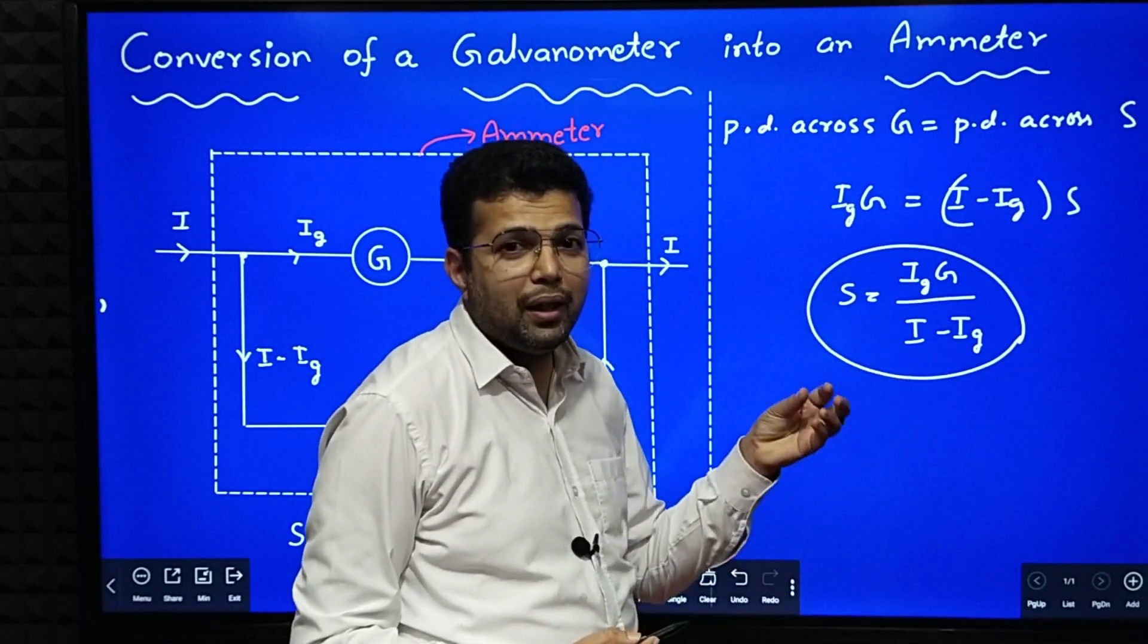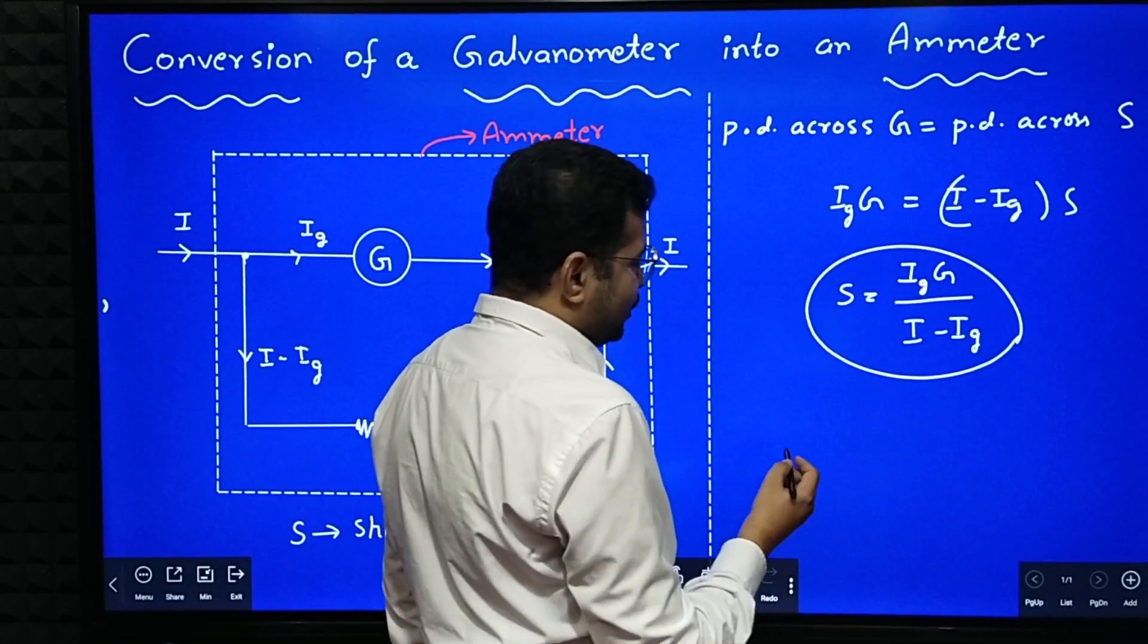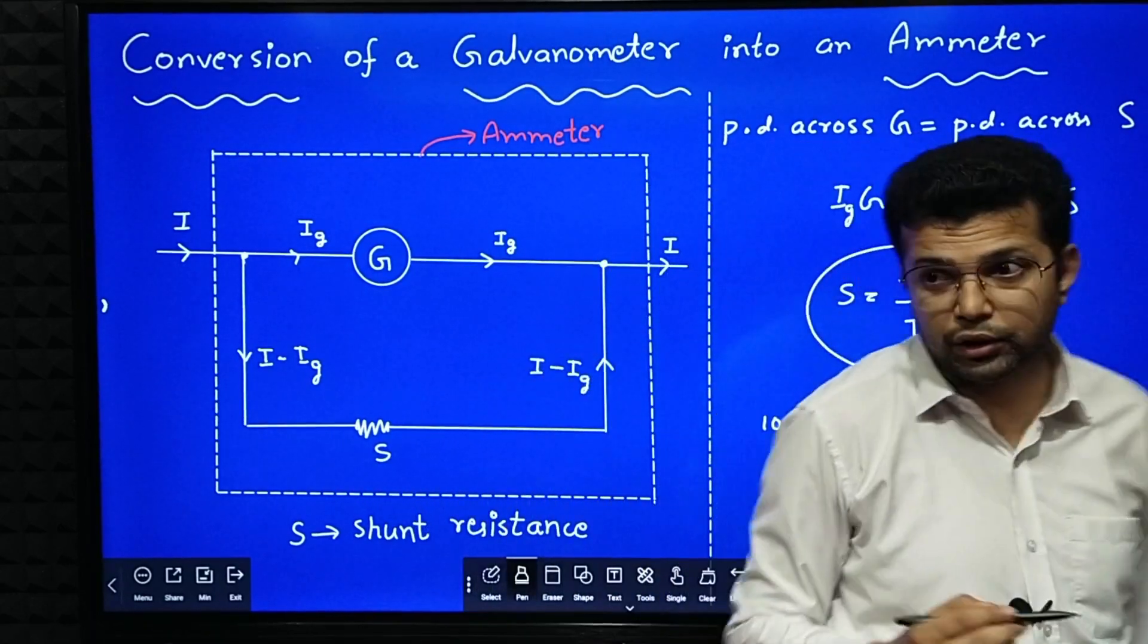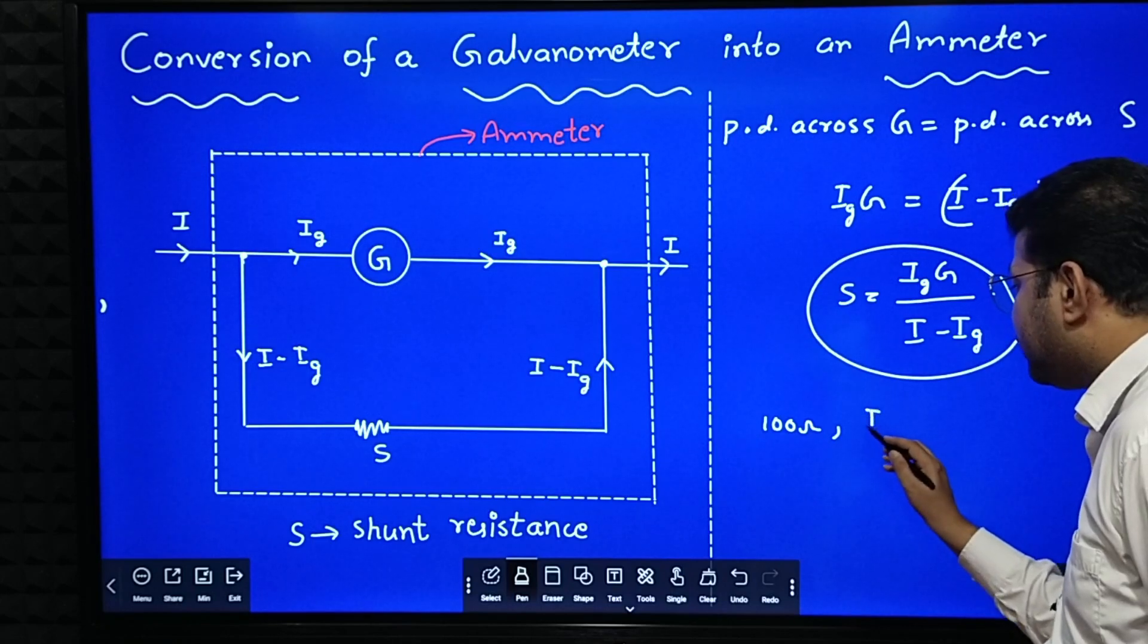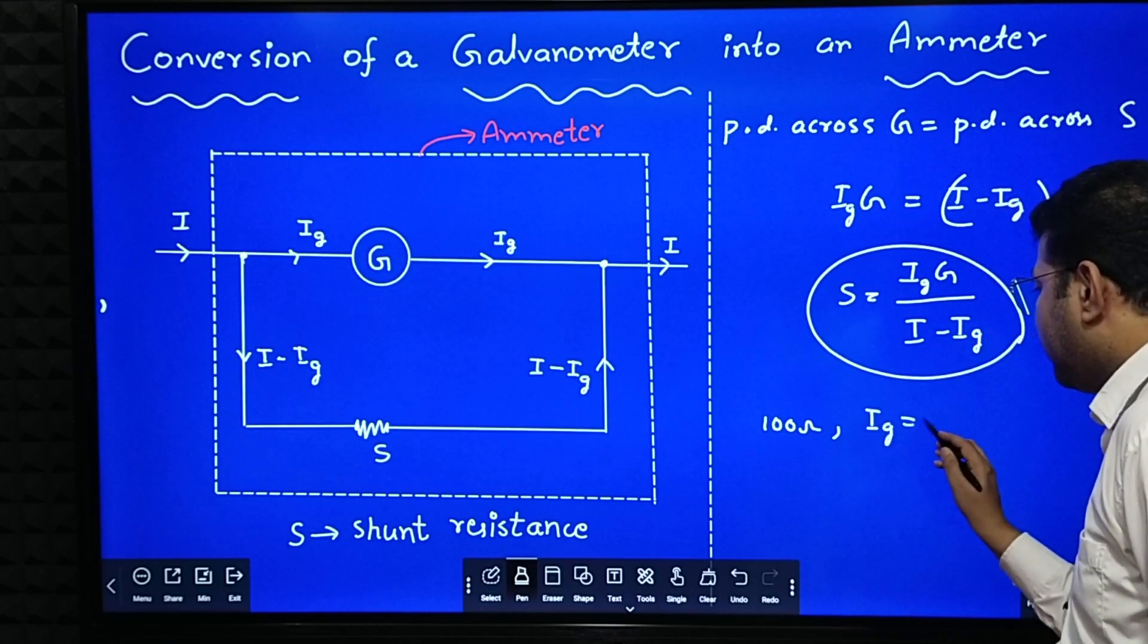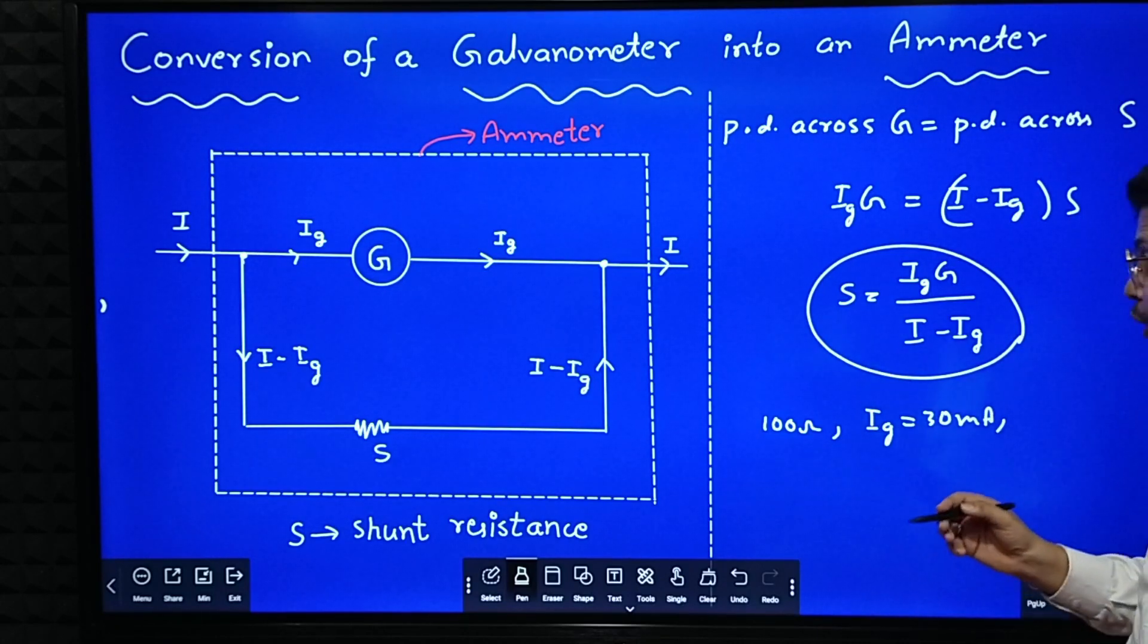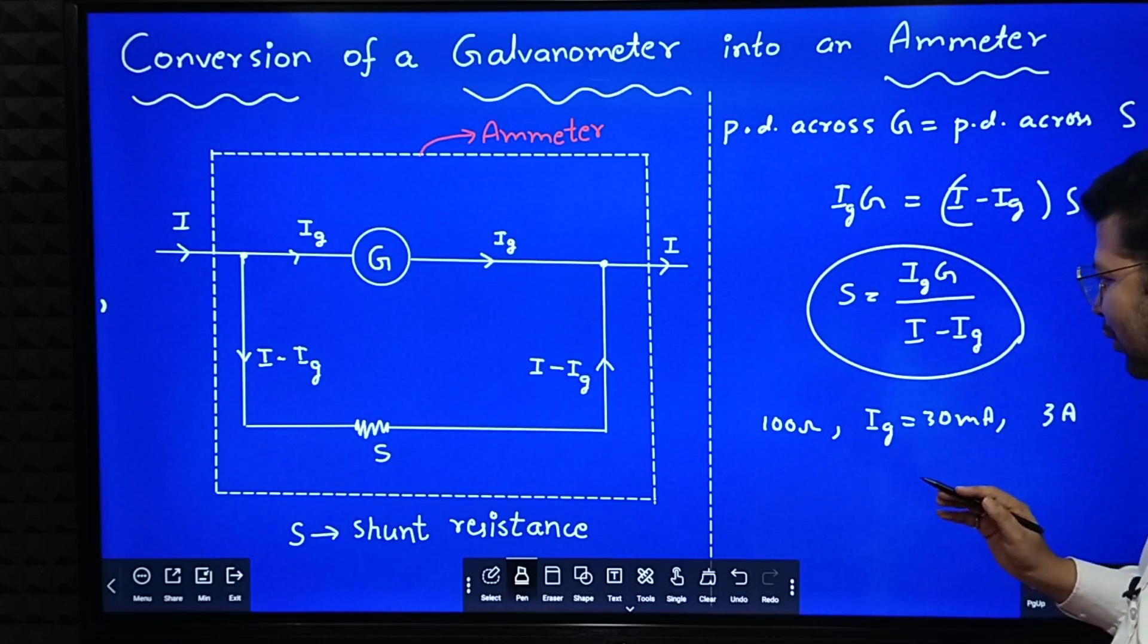Based on this formula, a problem can be asked something like this. There is a galvanometer of resistance 100 ohm. Current required for full-scale deflection in the galvanometer is 30 milliampere. How to convert this galvanometer into an ammeter of range 3 ampere? Like that question they will ask.